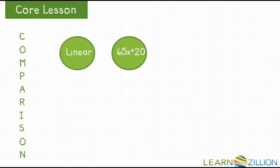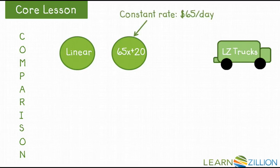Alright, so let's do some comparisons. 65x plus 20, that is a linear expression. As our truck example, the constant rate here is 65 dollars per day. The variable is x. It represents the number of days for that rental. And if you remember that 20 dollars, that 20 represents that 20 dollars for that insurance fee.